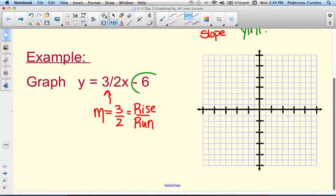And then our y-intercept is negative 6. So we're going to start at over 0 down 6 on the y-axis. So here is our y-axis. We're going to graph the ordered pair over 0 down 6.